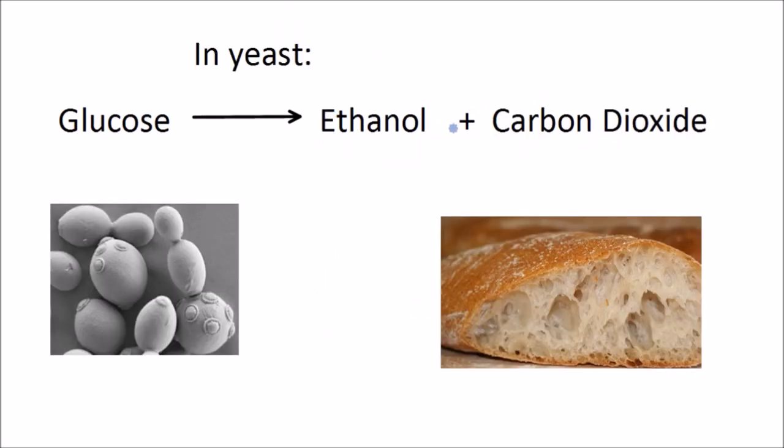Now in plants and in yeast it's slightly different. Anaerobic respiration happens like this in yeast cells. So here's an example. This is just a microscope image of yeast cells here. And in yeast cells the glucose is turned into ethanol and carbon dioxide.